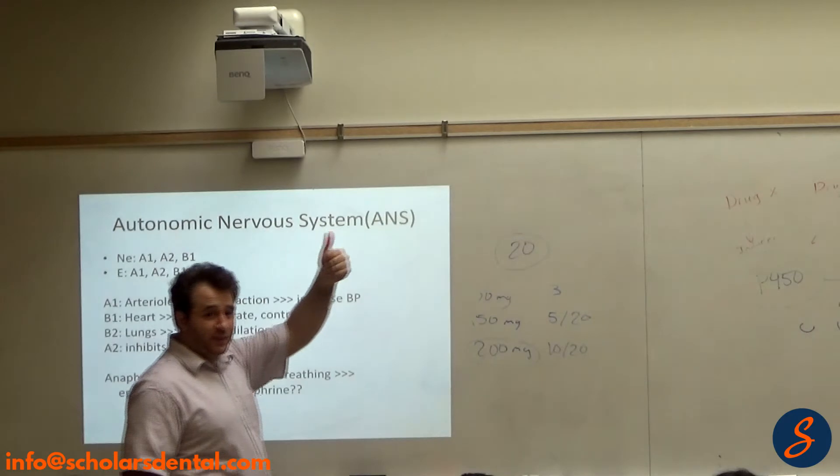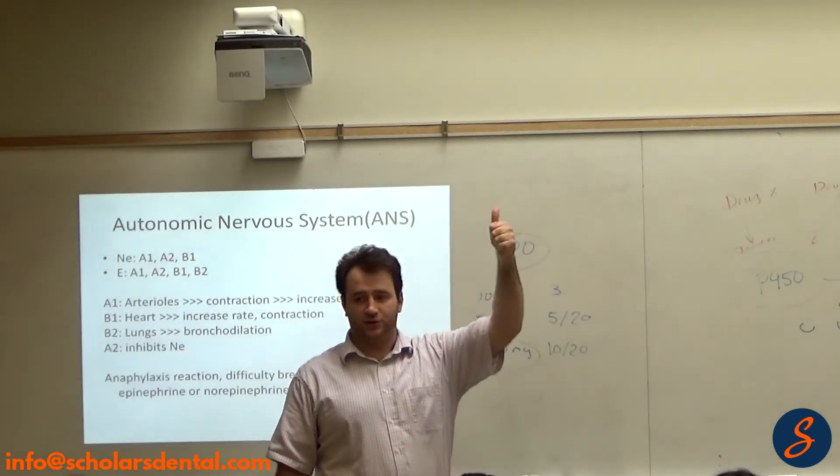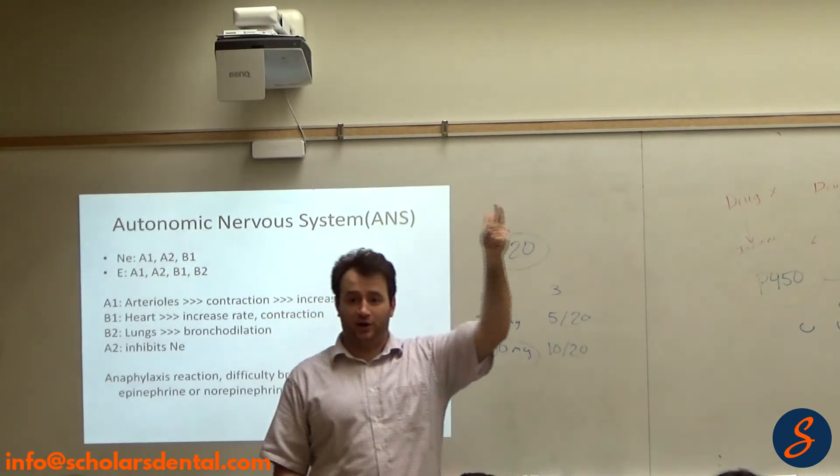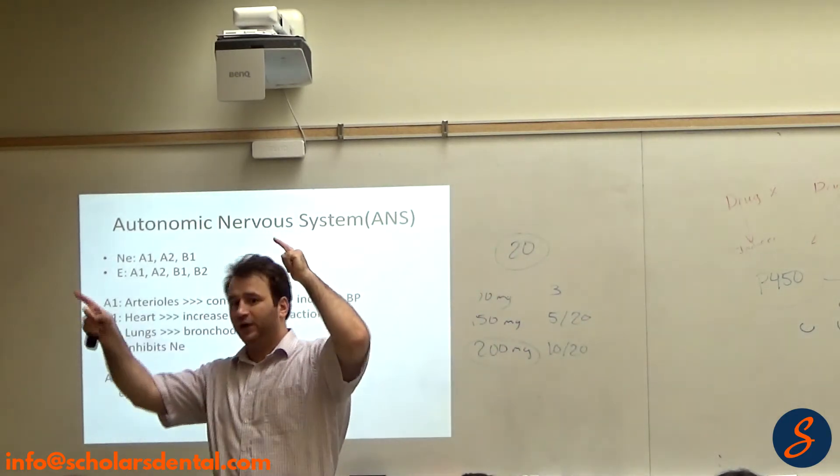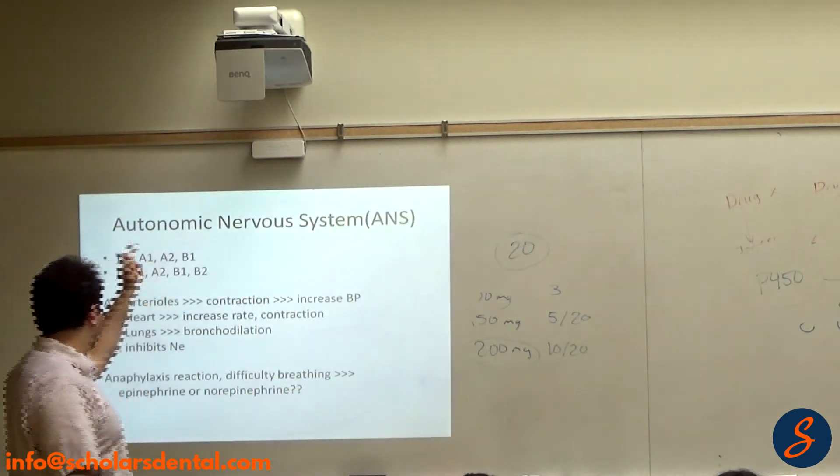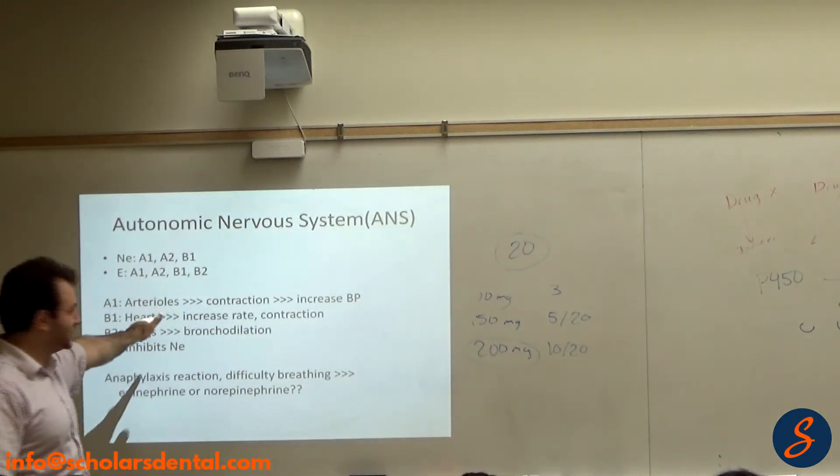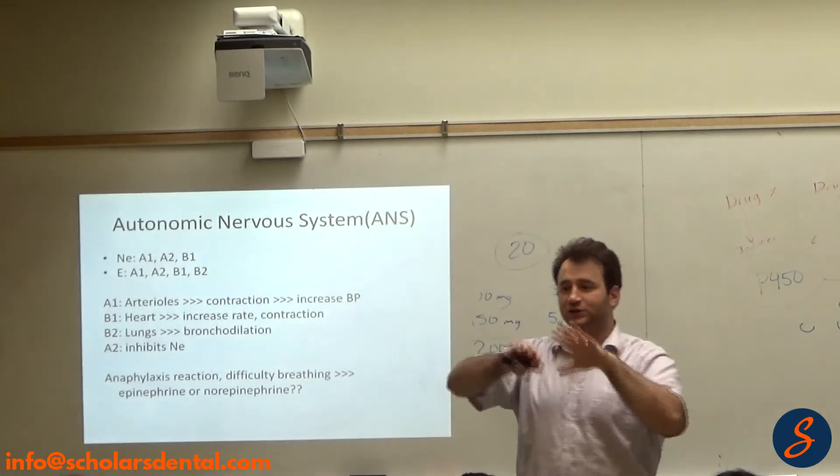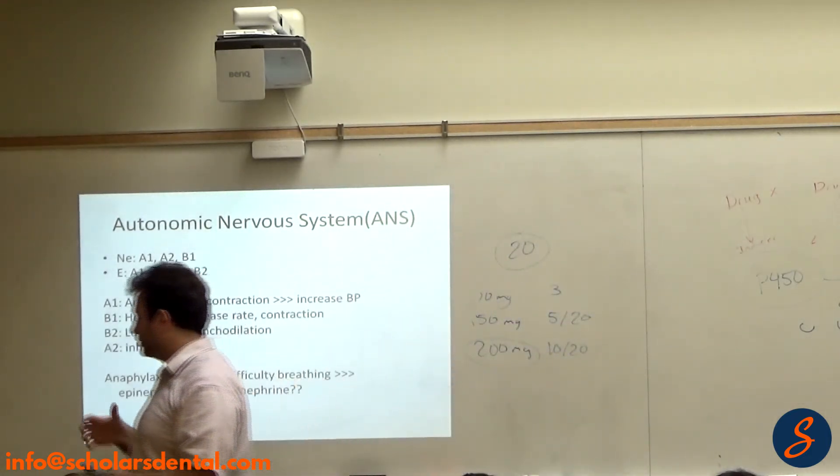We said alpha 1 mainly on arterioles. Beta 1 on the heart—if you draw the beta sideways, and how many hearts do you have? One. So beta 1 is on the heart. Beta 2 is lungs. Alpha 2 is stop. It shuts down the system, the adrenergic stimulation.